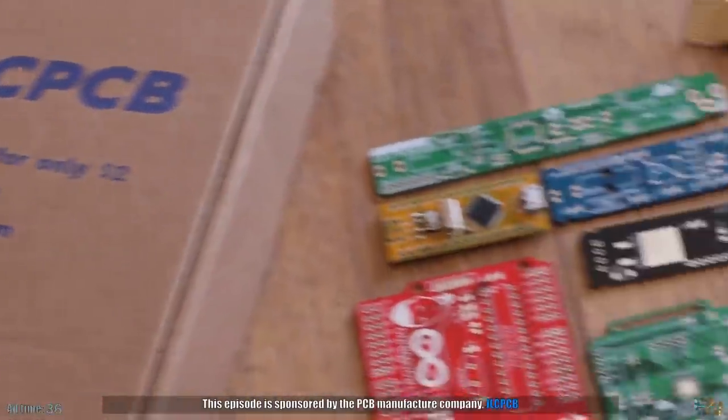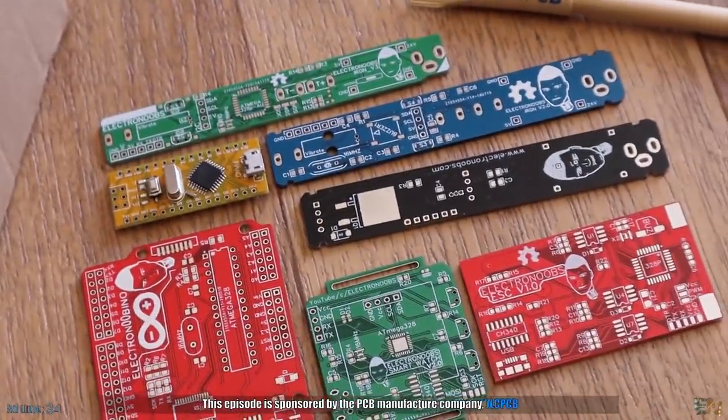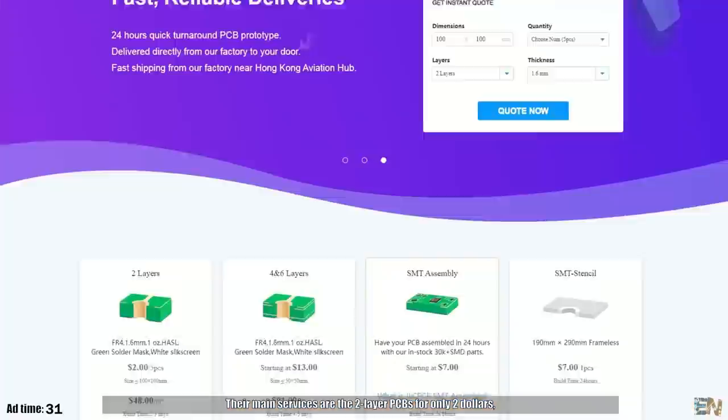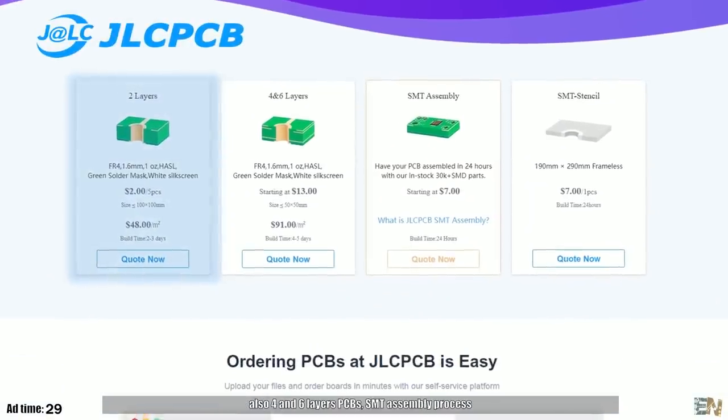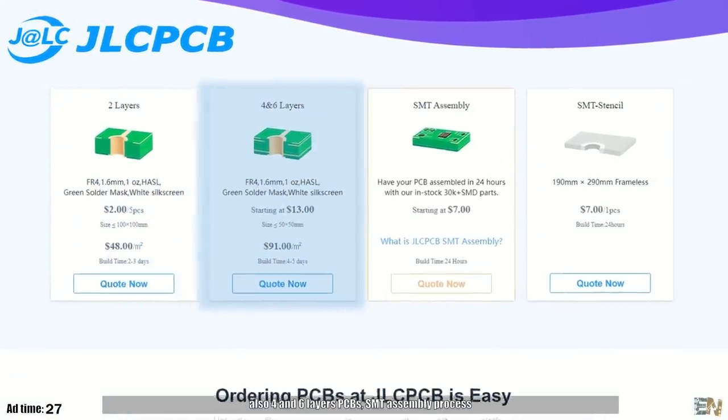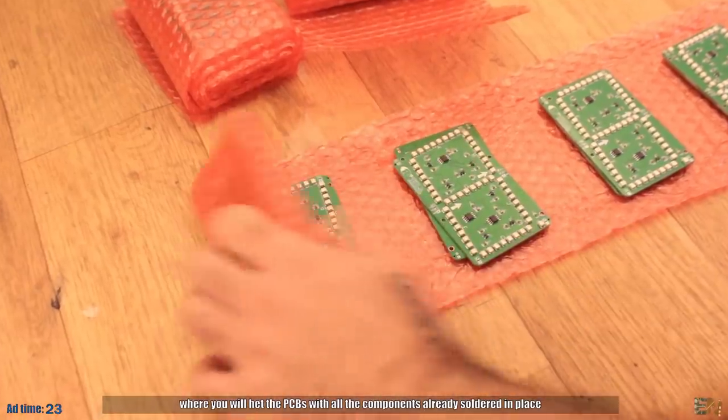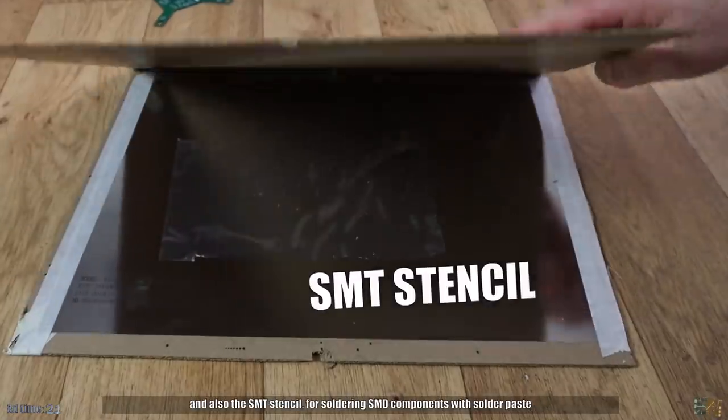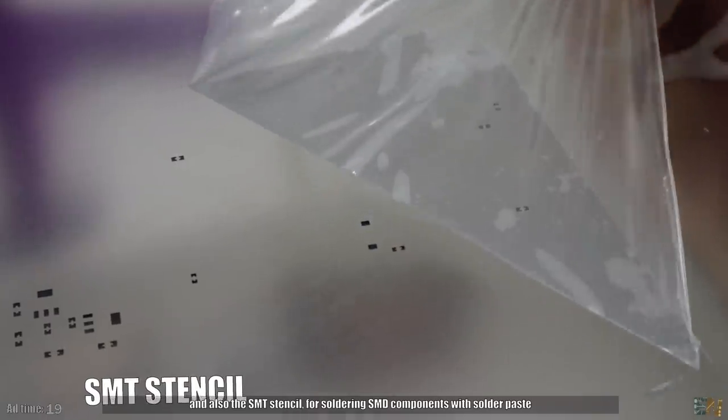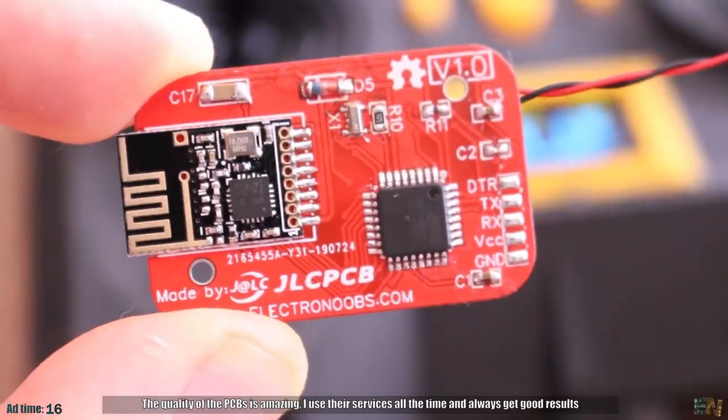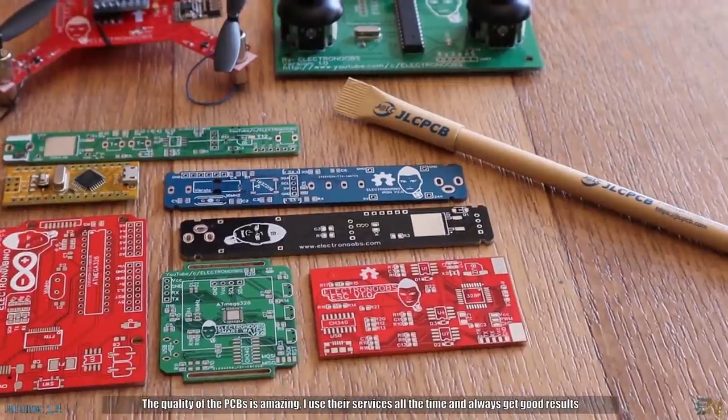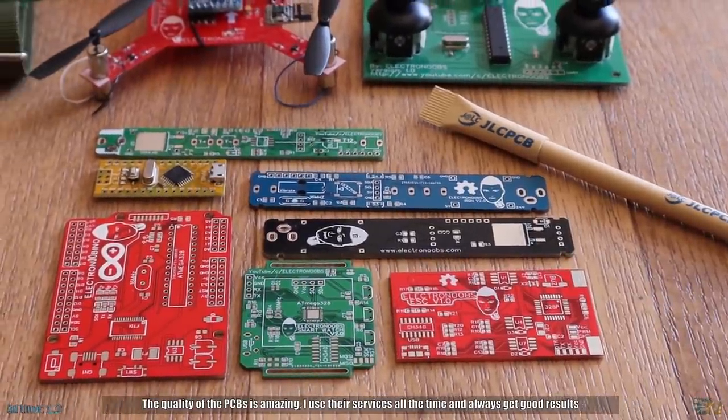This episode is sponsored by the PCB manufacturer company, JLCPCB. Their main services are the 2 layer PCBs for only $2. Also 4 and 6 layer PCBs, the SMT assembly process where you will get the PCBs with all the components already soldered in place and also the SMT stencil for soldering SMT components with solder paste. The quality of the PCBs is amazing. I use their services all the time and always get good results.